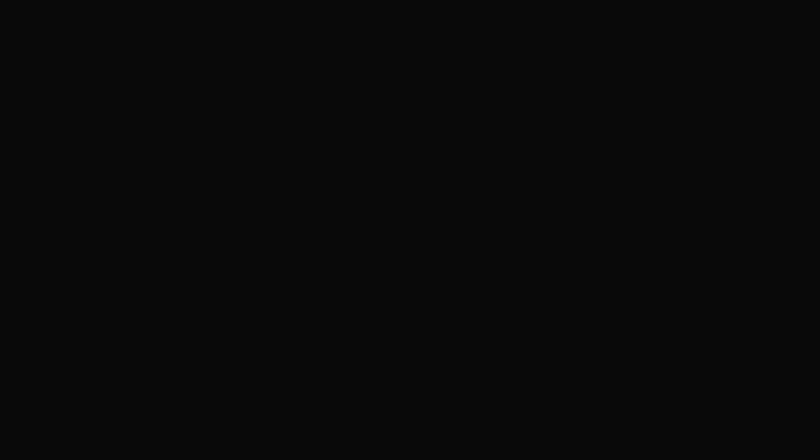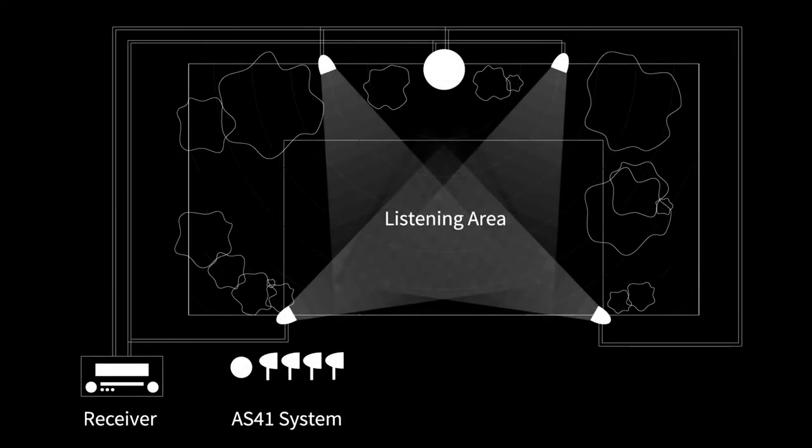Layout. First, begin by placing the satellites around the perimeter in your desired listening areas. The satellites should be planted about 6 to 8 feet, or 1.8 to 2 meters apart from one another.